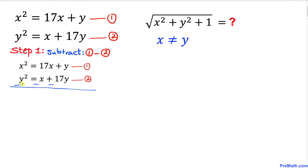Subtracting gives us x² − y² on the left-hand side. On the right-hand side, 17x minus x becomes 16x, and then minus 16y.